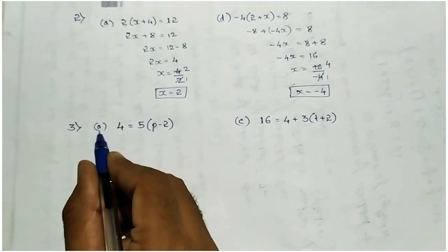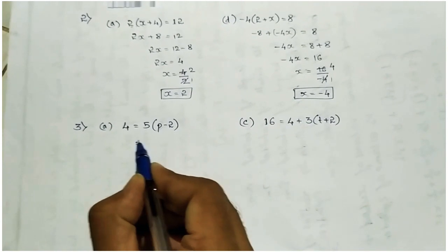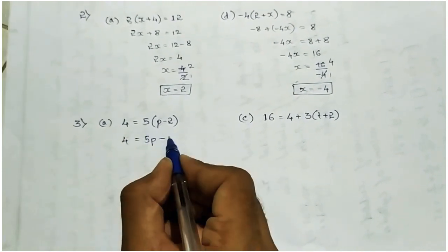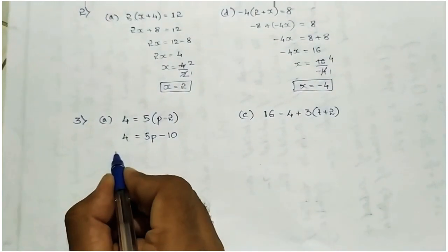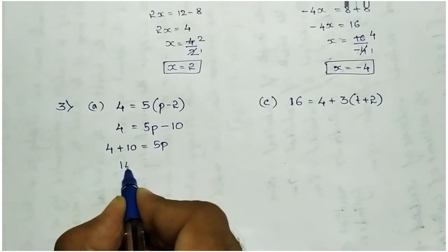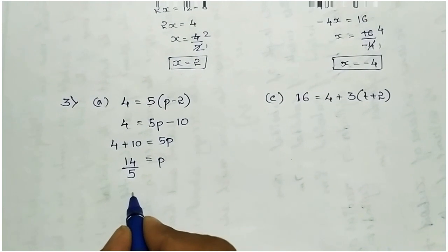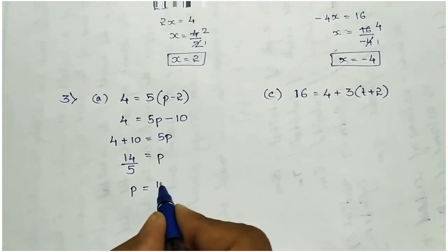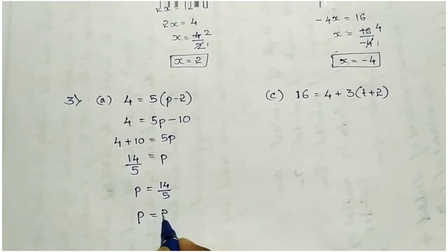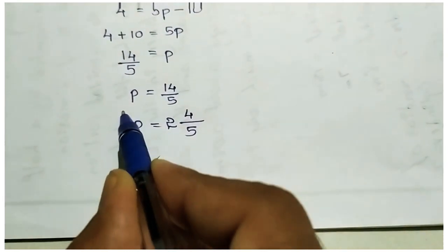Third main a: 4 equal to 5 of p minus 2. Multiply 5 into the bracket: 5 into p is 5p, minus 5 into 2 is 10. So 4 equal to 5p minus 10. Take 10 to the left side — it becomes plus — so 4 plus 10 equal to 5p, giving 14 equal to 5p. Take 5 to the left side — it becomes divisible — so p equal to 14 by 5. In improper form, dividing gives 2 remainder 4, so p equal to 2 and 4 by 5.